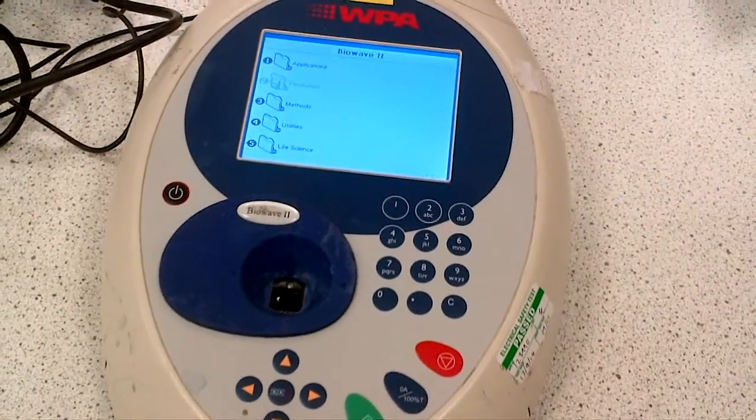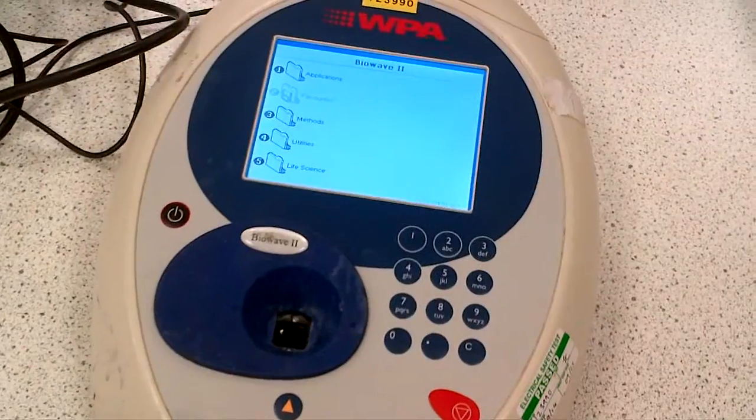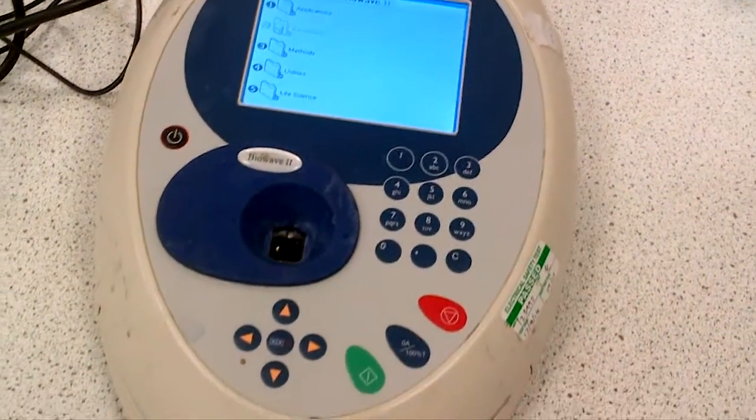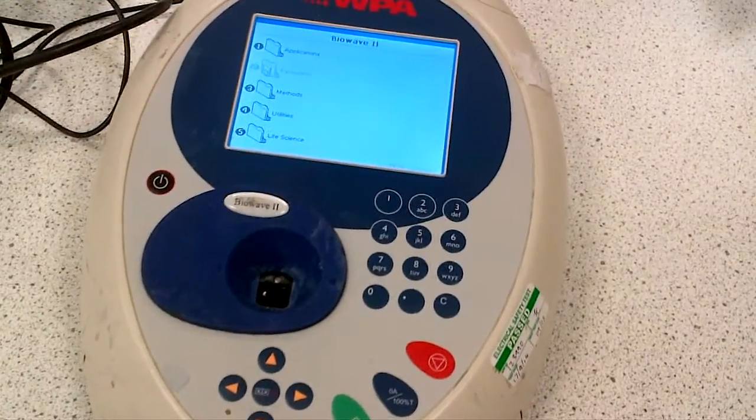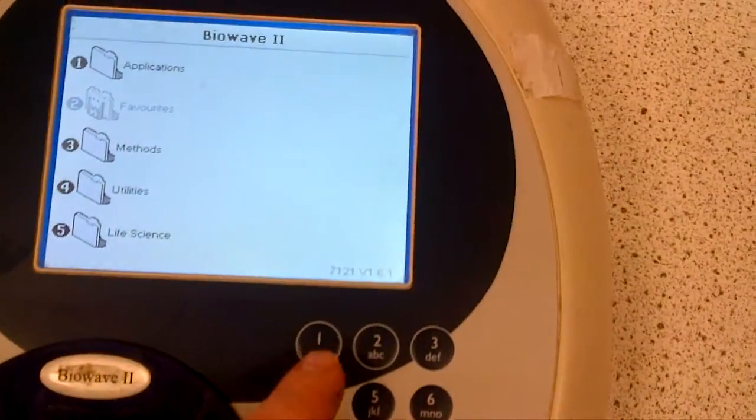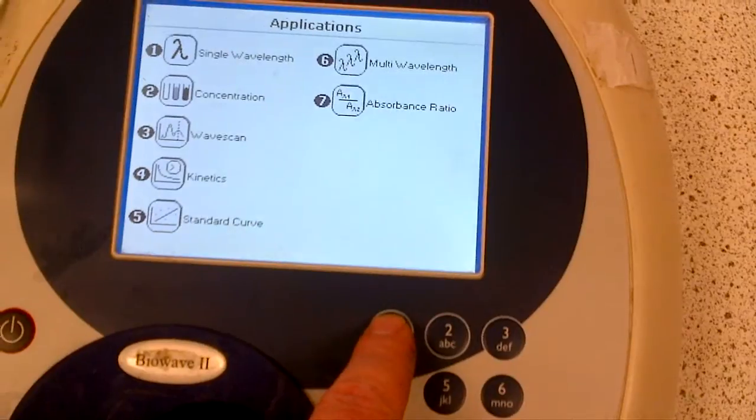So here's this WPA spectrophotometer. After plugging it in and making sure that the power is on, to set it to wavelength, which I'll just show you today, all you need to do is look at applications on the screen and simply press number 1 for applications to set it to single wavelength.